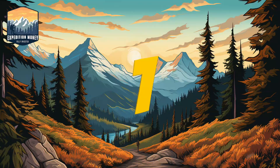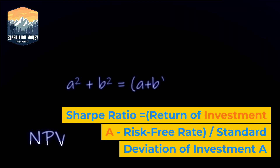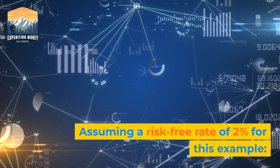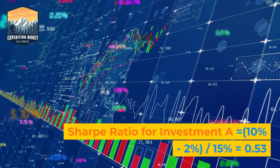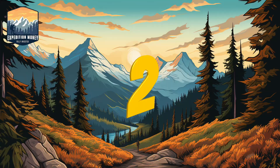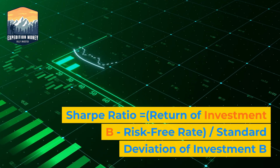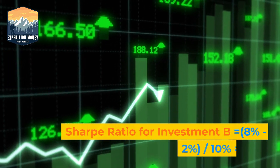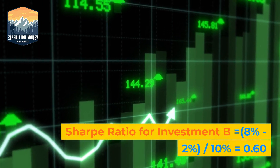To calculate the Sharpe Ratio for each investment: for Investment A, the Sharpe Ratio equals the return of Investment A minus the risk-free rate, divided by the standard deviation of Investment A. Assuming a risk-free rate of 2%, the Sharpe Ratio for Investment A equals 10% minus 2% divided by 15%, which equals 0.53. For Investment B, the Sharpe Ratio equals the return of Investment B minus the risk-free rate divided by the standard deviation of Investment B, which equals 8% minus 2% divided by 10%, equaling 0.60.